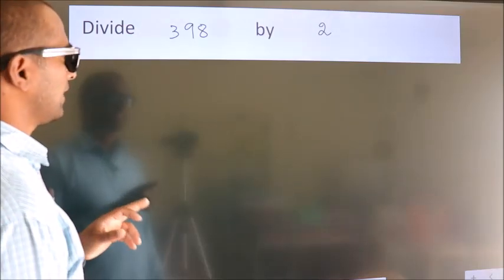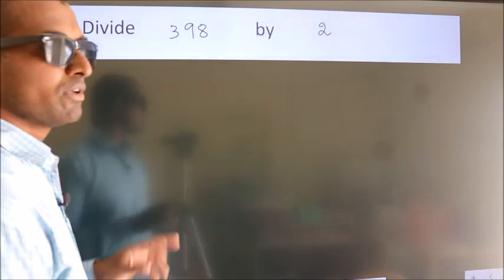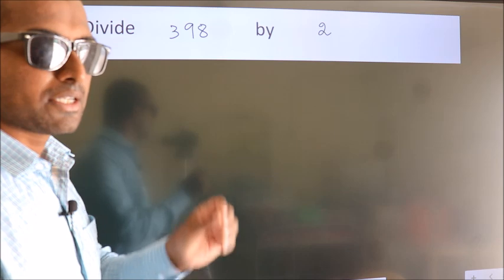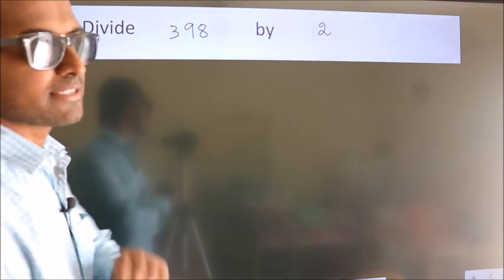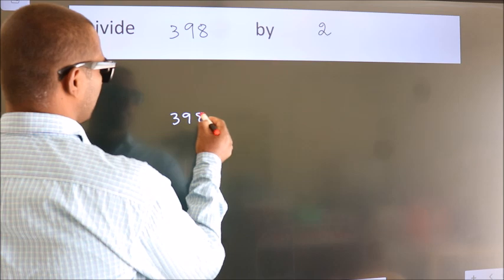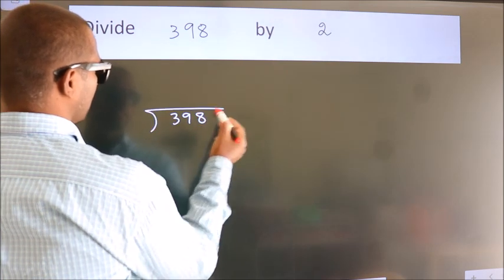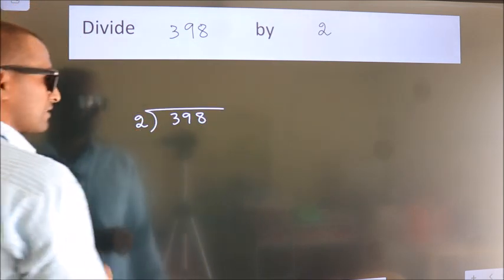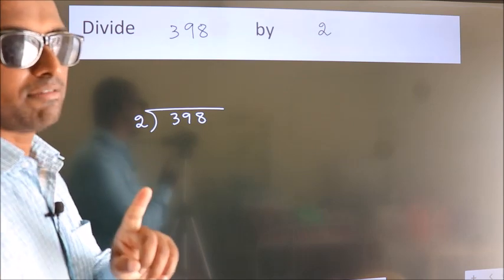Divide 398 by 2. To do this division, we should frame it in this way. 398 here, 2 here. This is your step 1.